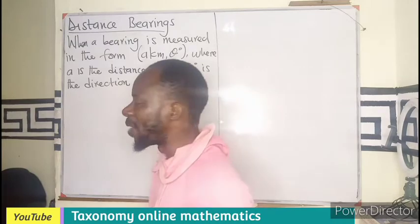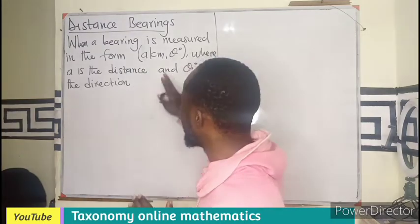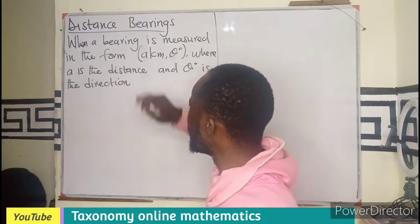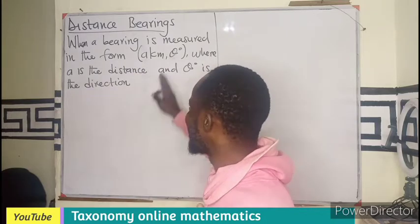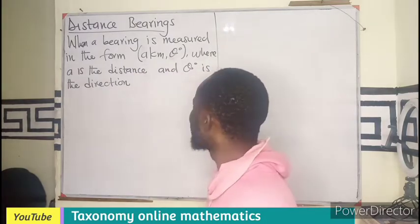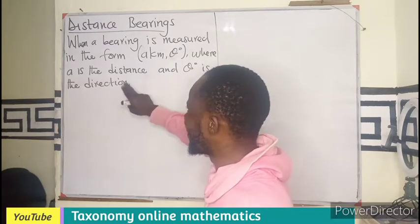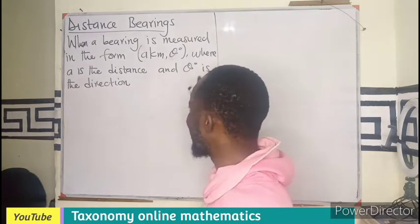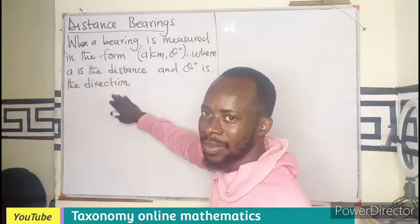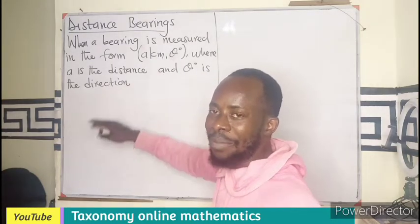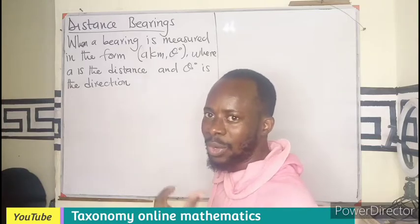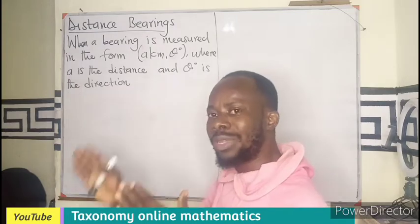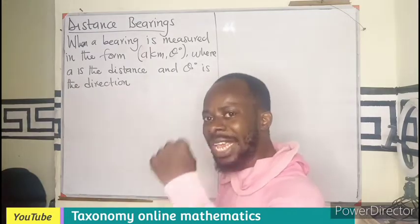A distance bearing can be expressed in the form A kilometers, theta degrees, where A is the distance between the two points and theta is the direction — the measurement of the angle between the two points, measured in a clockwise direction. We know bearing is a measurement of an angle.